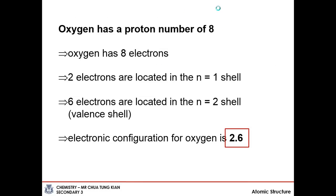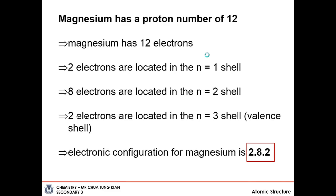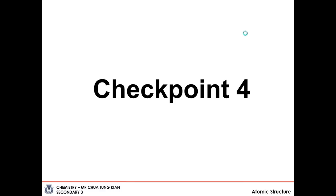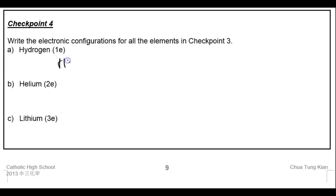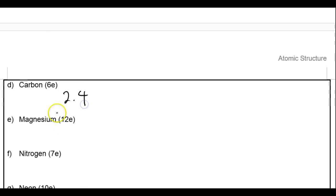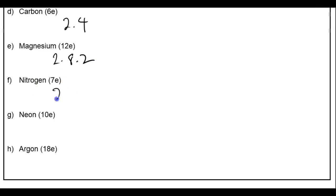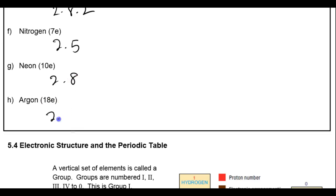For checkpoint 4, the electronic configurations are: hydrogen (1 electron) = 1; helium (2 electrons) = 2; lithium (3 electrons) = 2.1; carbon (6 electrons) = 2.4; magnesium (12 electrons) = 2.8.2; nitrogen (7 electrons) = 2.5; neon (10 electrons) = 2.8; argon (18 electrons) = 2.8.8. We write these electronic configurations because the proton number increases consecutively from element to element, and the number of electrons in a neutral atom equals the number of protons.